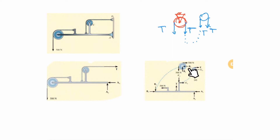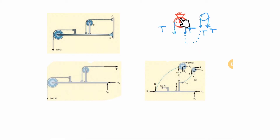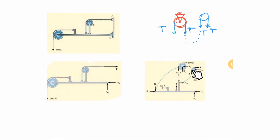For pulleys, writing sigma_M is not directly helpful in the usual sense, because we already know T1 equals T2 by applying moment equilibrium around the central pin — sigma_M = 0 means T1 = T2, so that equation is already used. This reduces one unknown, so only sigma_x and sigma_y remain for each pulley element.